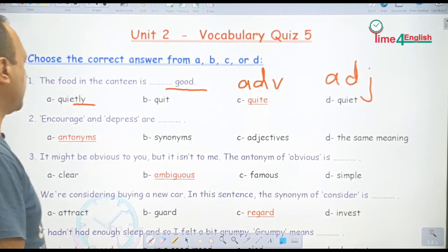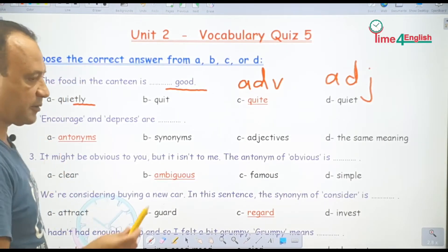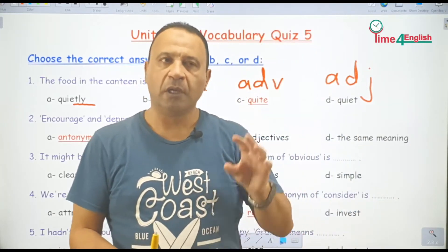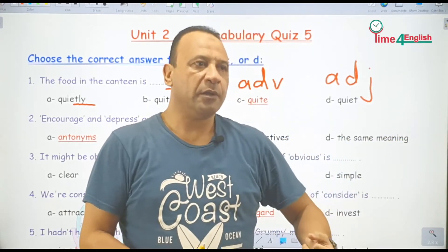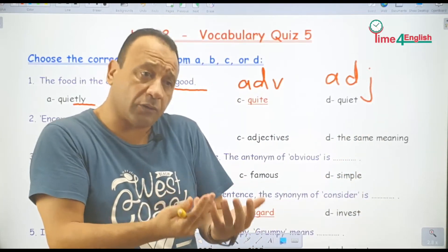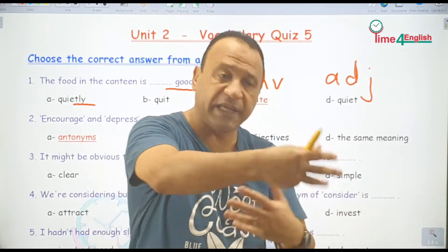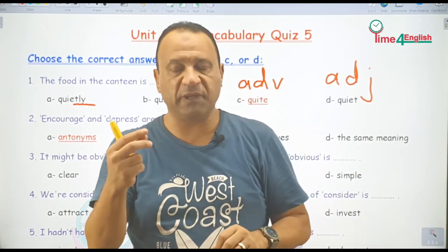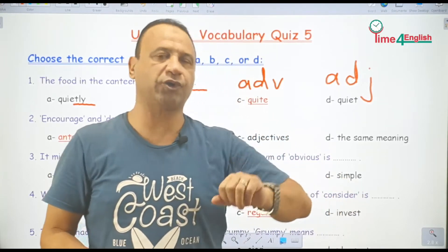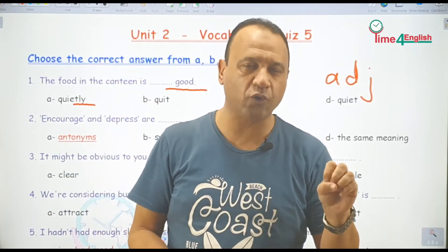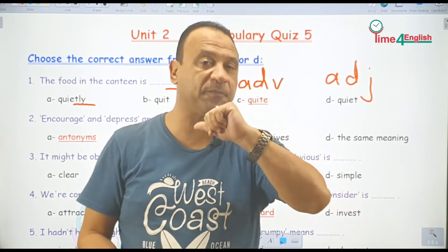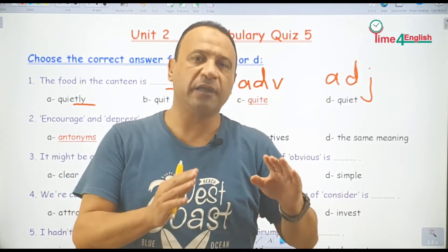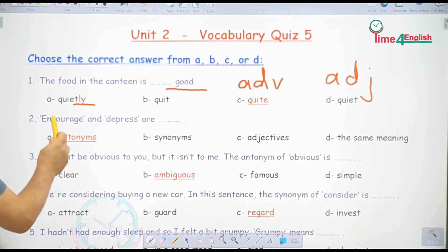Encourage and depress are antonyms — opposites. You encourage someone يعني تشجعه، you depress him يعني تحبطه، تكئبه. في مجال الاقتصاد والبزنس، to encourage يعني تقوم بما يؤدي إلى رواج وتشجيع هذه الصناعة أو التجارة. You depress it يعني بتتكلم عن ظروف معينة تؤدي إلى كساد وركود هذا النشاط — تصيبه بالكساد والركود. أخذنا منها expression وهو depression — economic depression.